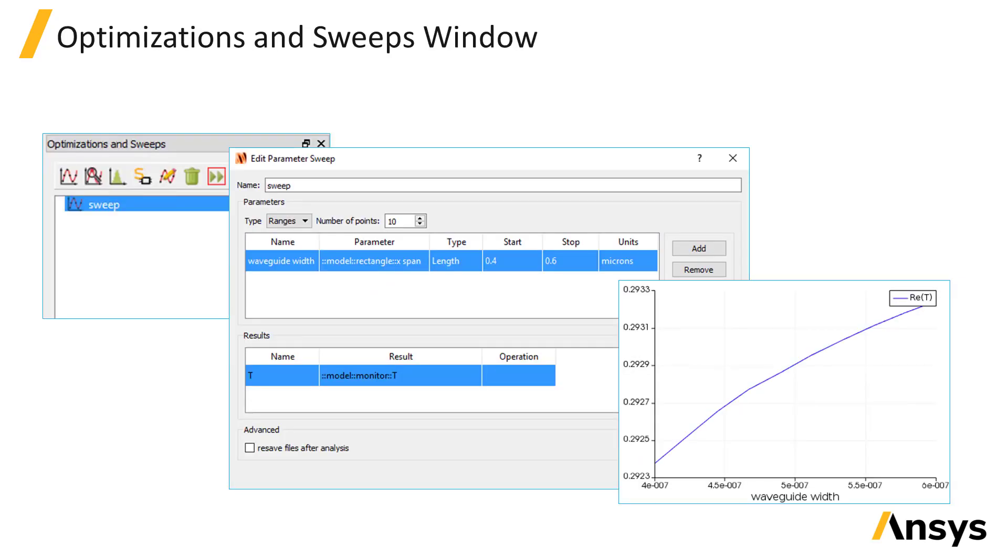There is also a built-in parameter sweep optimization, S-parameter sweep, and Monte Carlo analysis tool in the graphical user interface in the optimizations and sweeps window. These tools can also be used in the design process to sweep a parameter of the design and observe trends in the results, or to find optimal values for a set of parameters that optimize a figure of merit.